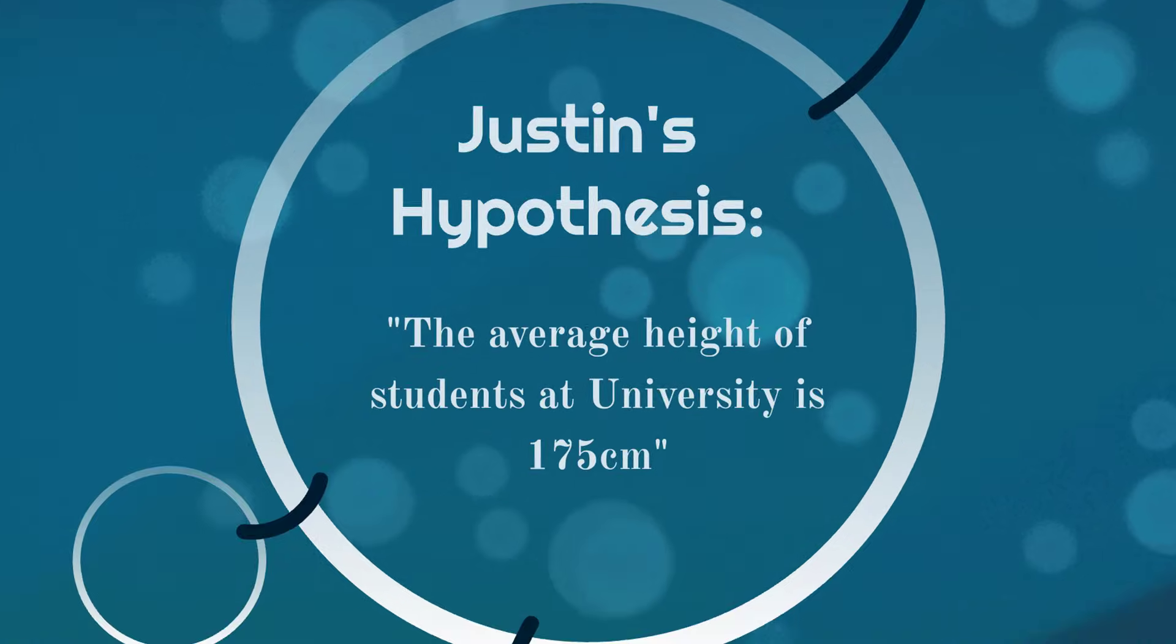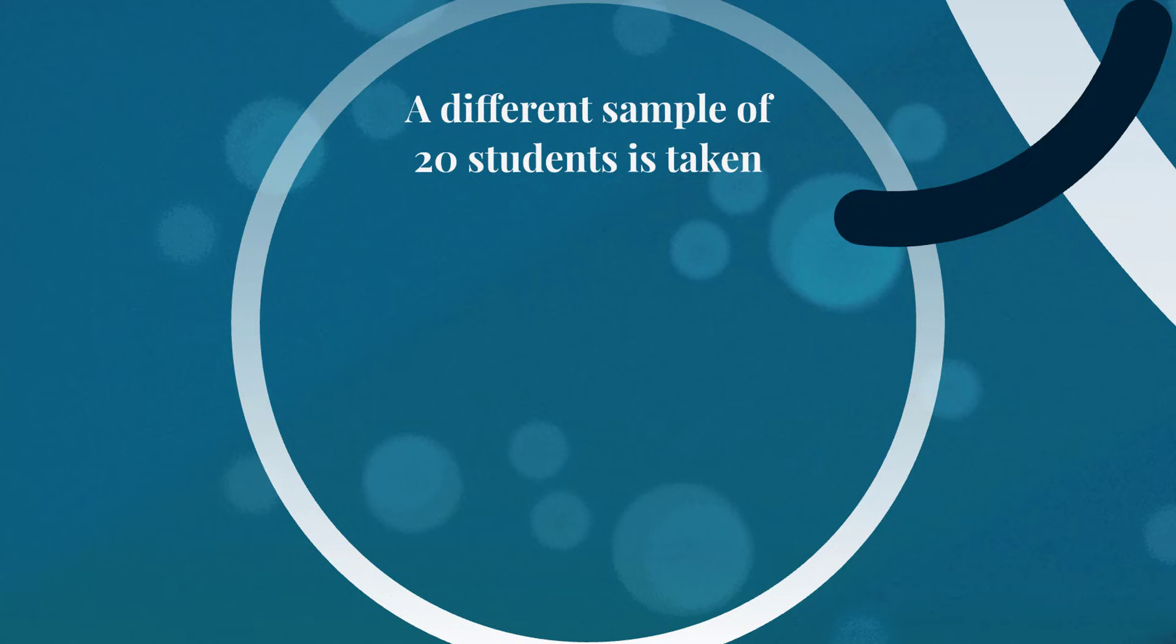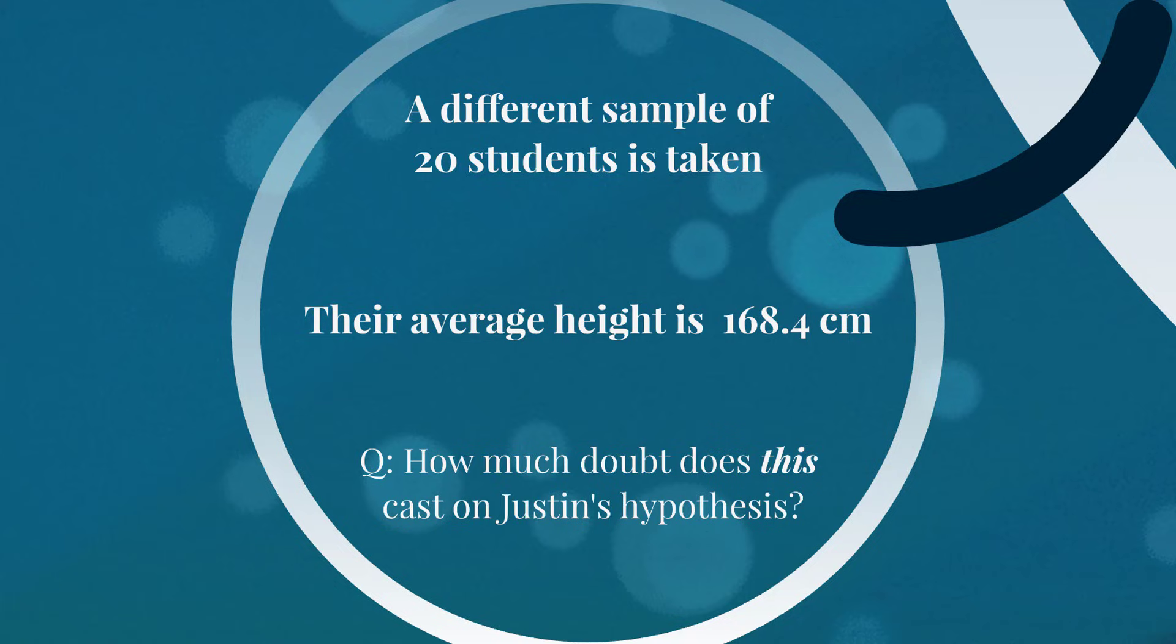Now, let me ask you this. Imagine we've taken another sample and the average height was 168.4 centimeters. That's now a little bit further away from 175. So how much doubt does this cast on my hypothesis? This is probably going to cast more doubt than the last example because even though we have the same number of people in our sample, their average height is quite a bit lower than 175. So you've got to start thinking, how likely is it that the true mean is 175? How likely is it that this sample is just randomly less than the true mean? Believe it or not, you've just done your first hypothesis test. We haven't dealt with any formulas or numbers yet, but this is just what a hypothesis test is.